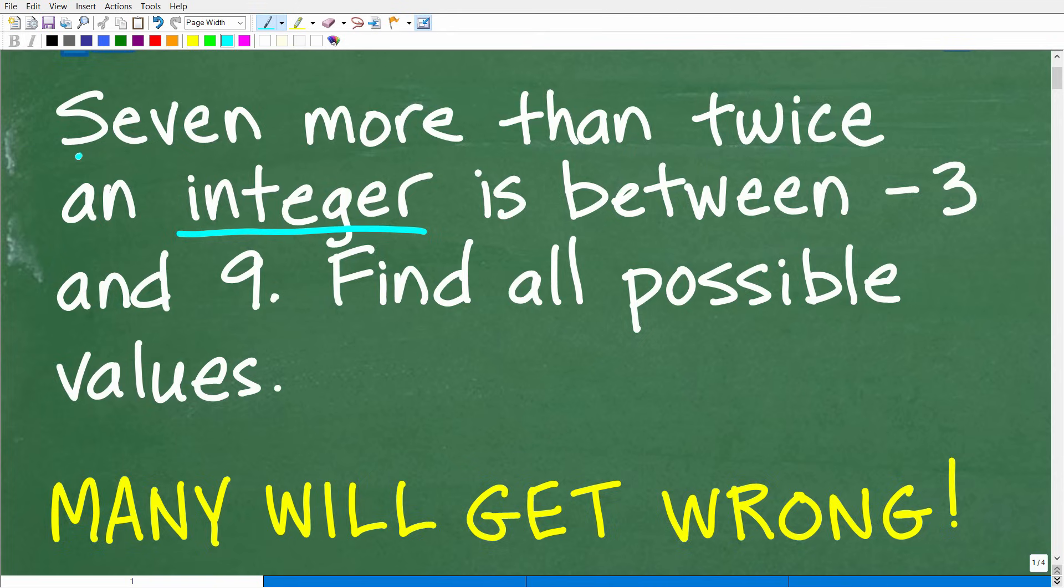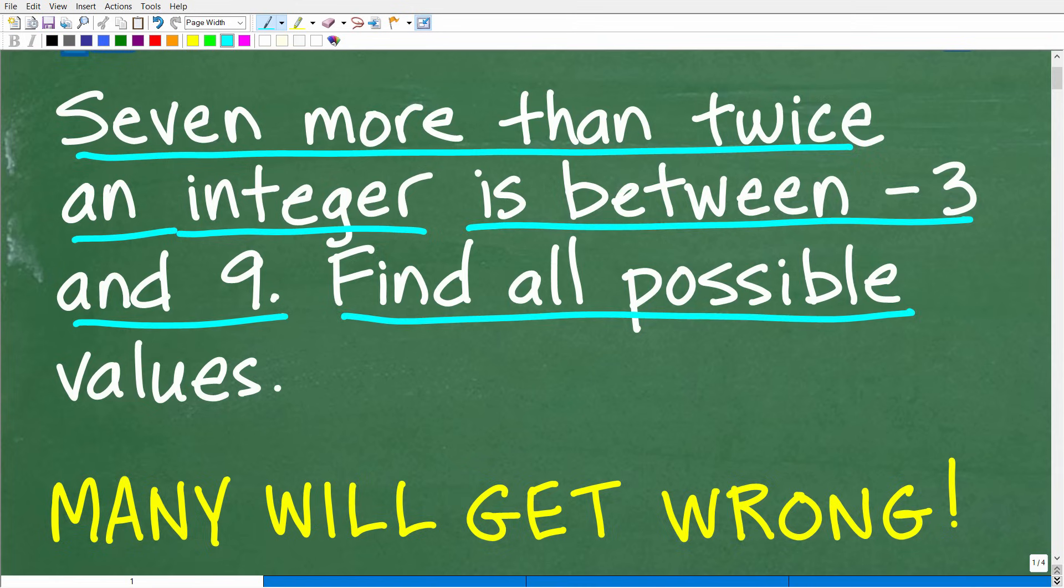Seven more than twice an integer is between negative three and nine. Find all possible values.